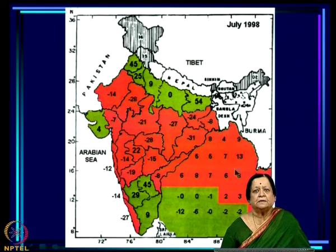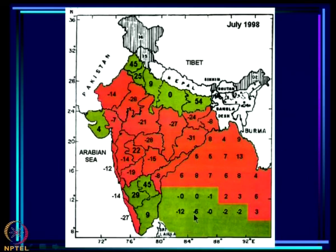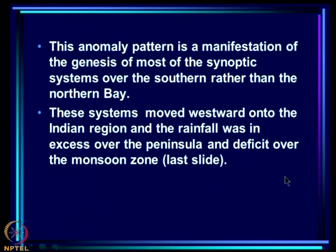The relationship of spatial variation of rainfall over the Indian region with convection anomalies over the Bay is somewhat complicated, illustrated by July 1998: most of the systems were generated in the southern Bay rather than the central and northern Bay. This shift in genesis region gave negative OLR anomalies in the south; the systems moved onto land and gave a lot of rain there, but since nothing was generated in the north, that whole belt got deficit rain.